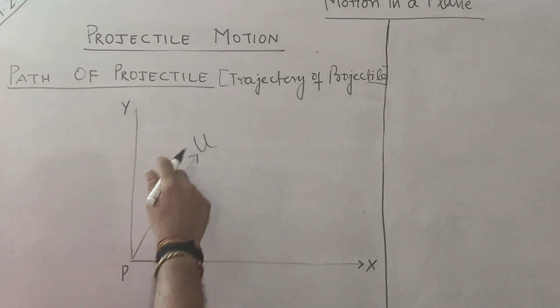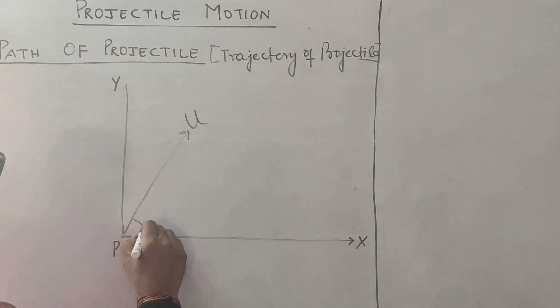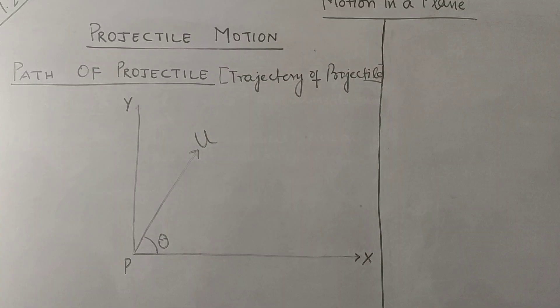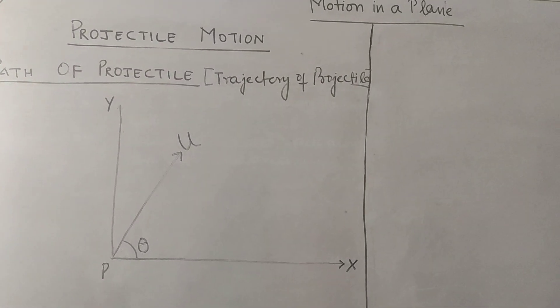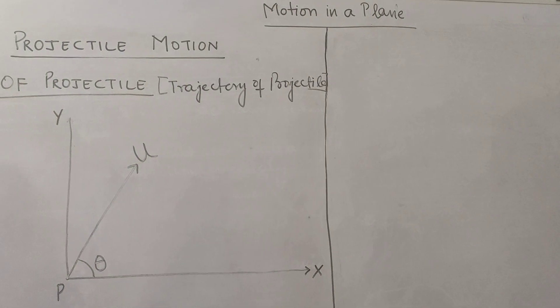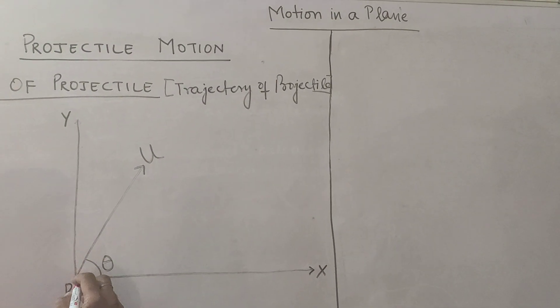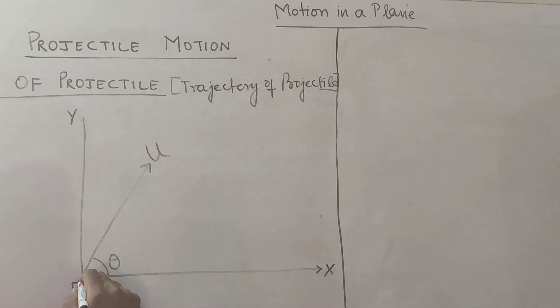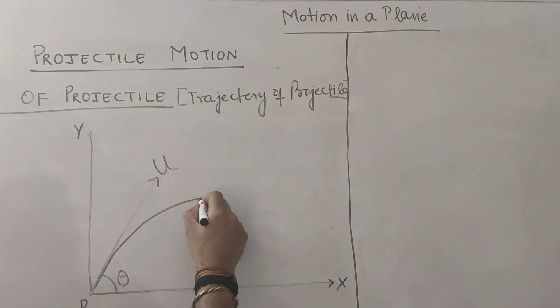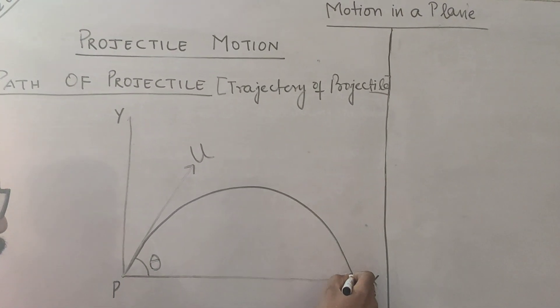An object is projected at an angle from this point. So let us see, if you draw an object along this direction at an angle theta, it will cover vertical distance as well as horizontal distance.